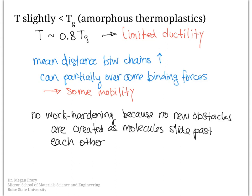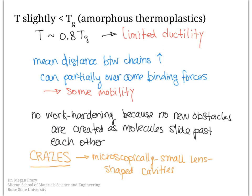During plastic deformation at these temperatures, there are microscopically small lens-shaped cavities that form in the material, and these are called crazes. In the slides that follow, we'll take a look at how crazes form, how they evolve during continued deformation, and what their size is.